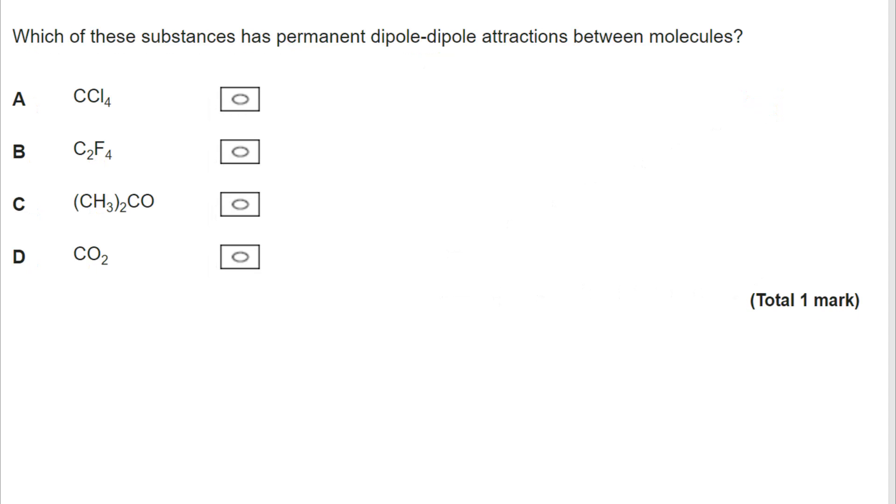Third variation on a very similar question here. Which of these have permanent dipole-dipole attractions between molecules? Well, I'm going to lay this out in a slightly different way. There is symmetry in the CCl4. Each of the Cls is pulling equally on the electrons, so they cancel out. But the same is true in tetrafluoroethene C2F4. And the same is true in CO2. However, when we look at answer C, we can see there is a delta negative oxygen and a delta positive carbon. So for that reason, the correct answer is C, propanone.